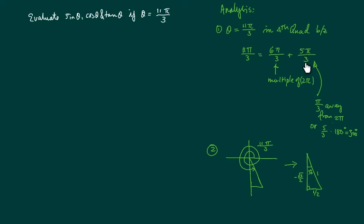Or you can see, well, 5π over 3 is really just π over 3, 60 degrees away from going back all the way to where it started at zero. Either way, you end up in quadrant 4.